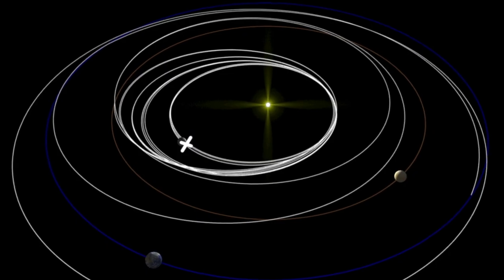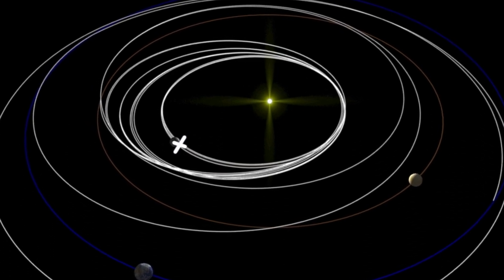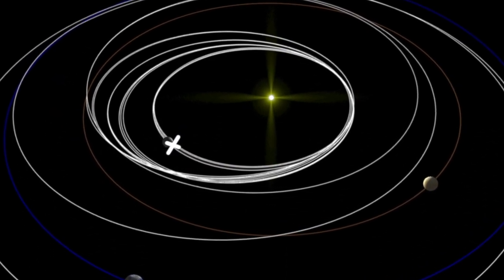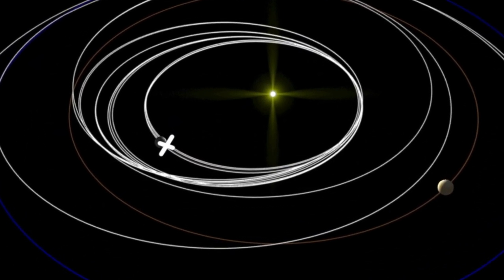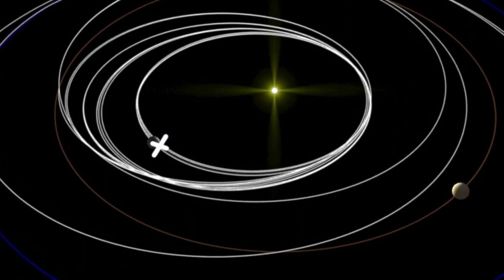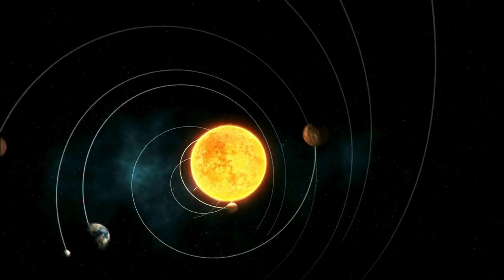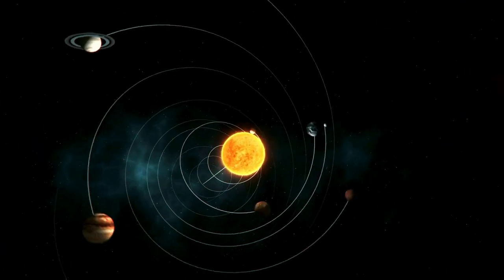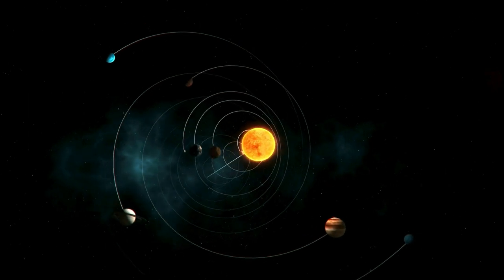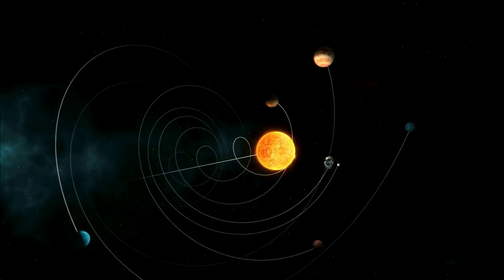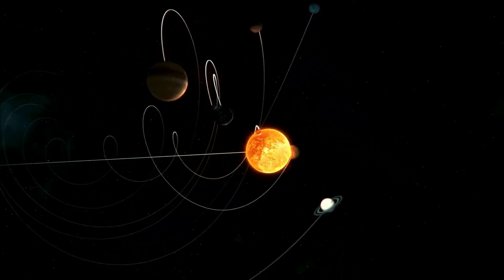For example, for Mercury, the planet closest to the sun, general relativity predicts that the long axis of its elliptical orbit should slowly rotate around the sun at a rate of about one degree every 10,000 years. This prediction was significant because, even though the effect is small, it was observed before 1915 and served as one of the initial confirmations of Einstein's theory.